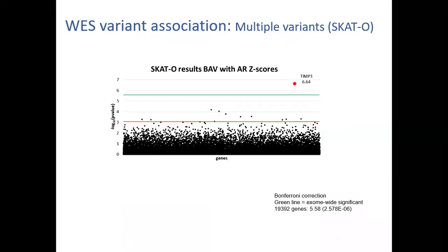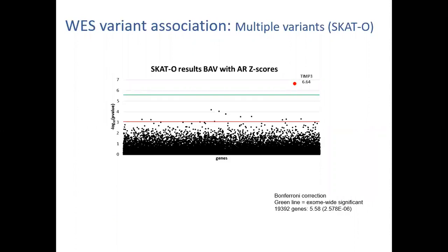We took a whole exome-wide association approach in my lab. From the GENTEC Turner syndrome cohort, now collected in BioLink, we analyzed individuals with Turner syndrome who either had bicuspid aortic valve and aortic disease or no detectable cardiovascular disease. We performed whole exome sequencing and a sequence kernel association test. A single gene arose above the exome-wide significance threshold in the scatter plot: the gene TMP3. Variants in TMP3 were associated with BAV and increased aortic root Z scores in this analysis.